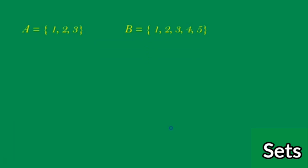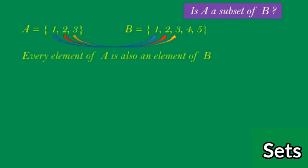Now we will look at two sets. A is set of {1, 2, 3} and B is set of {1, 2, 3, 4, 5}. The question is: is A a subset of B? When do we say that a set is a subset of another? If every element of the first set is also an element of the second set, then we say the first set is a subset of the second. Every element of A is also an element of B, so A is a subset of B — in fact, a proper subset.